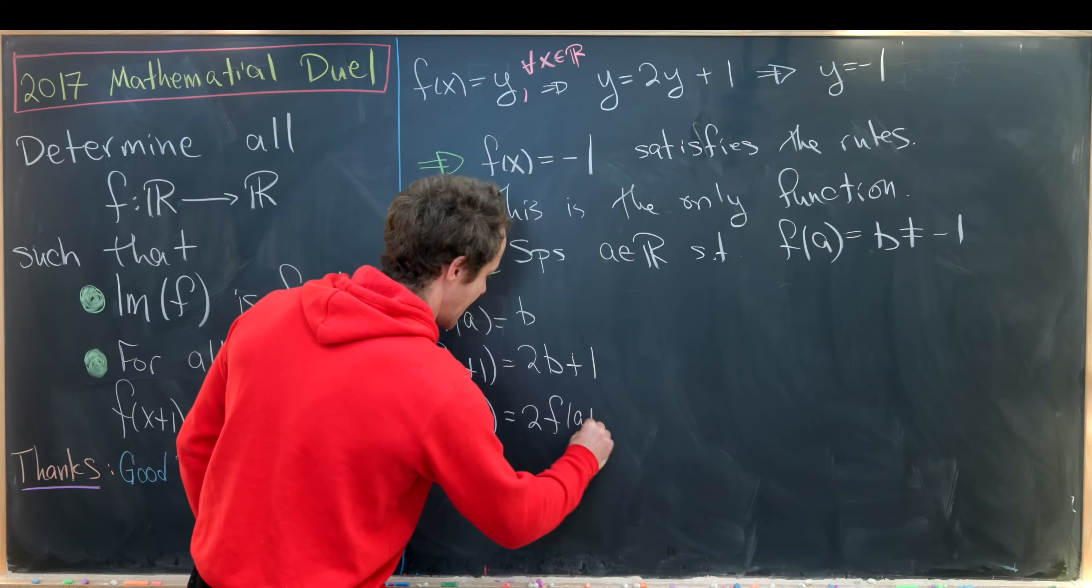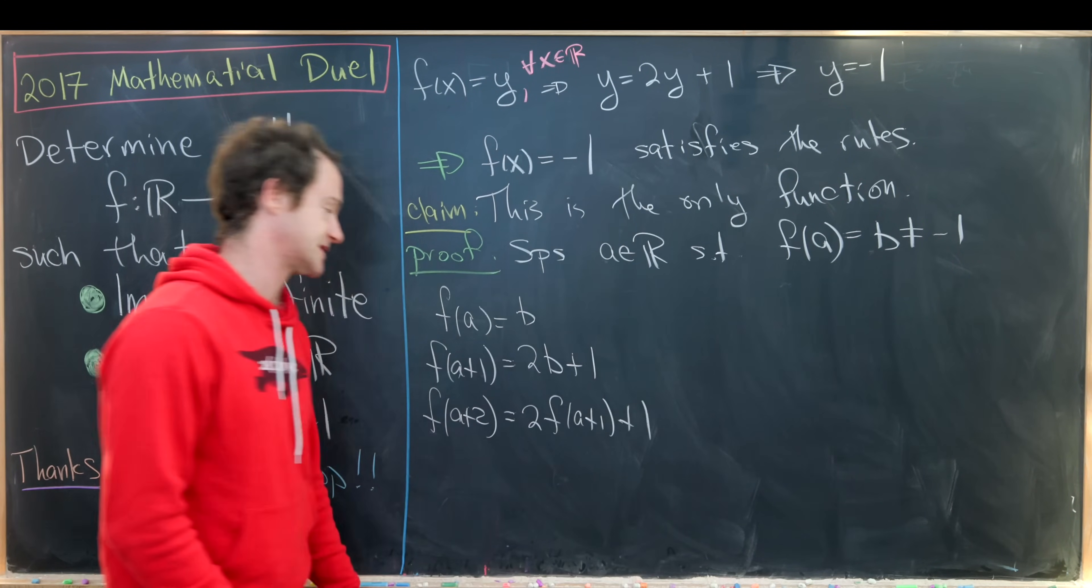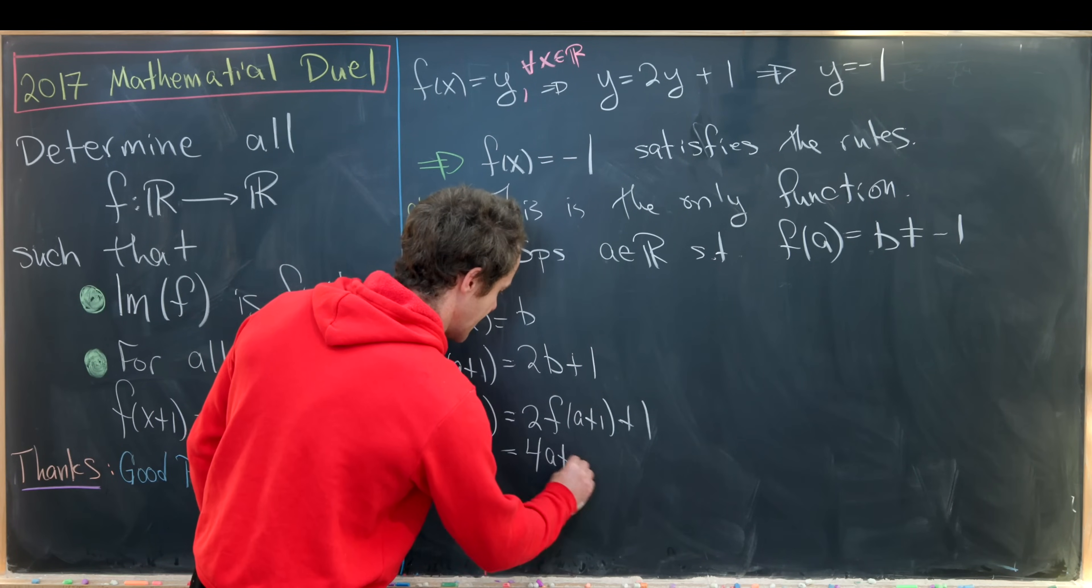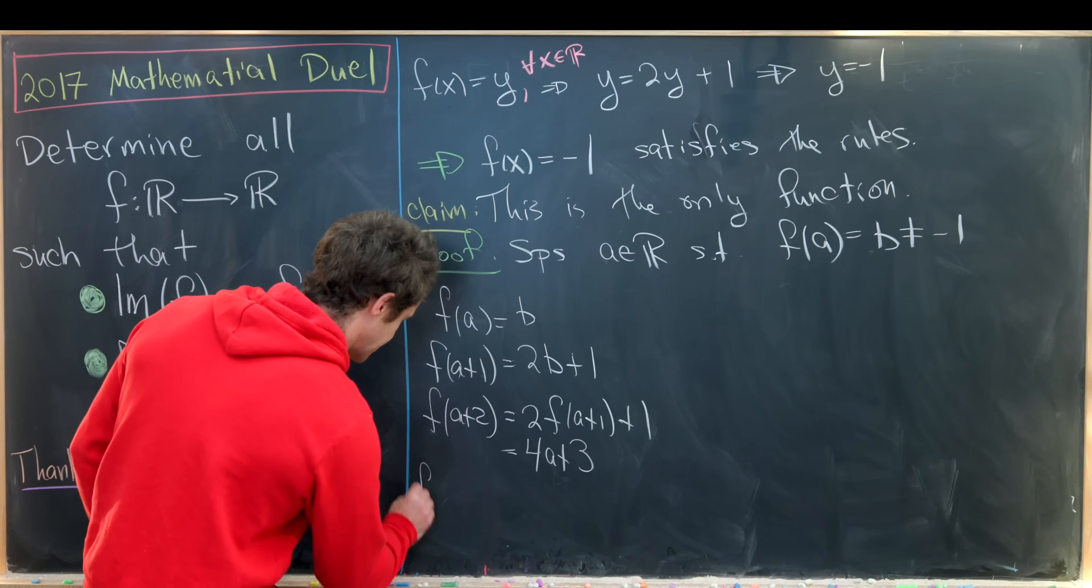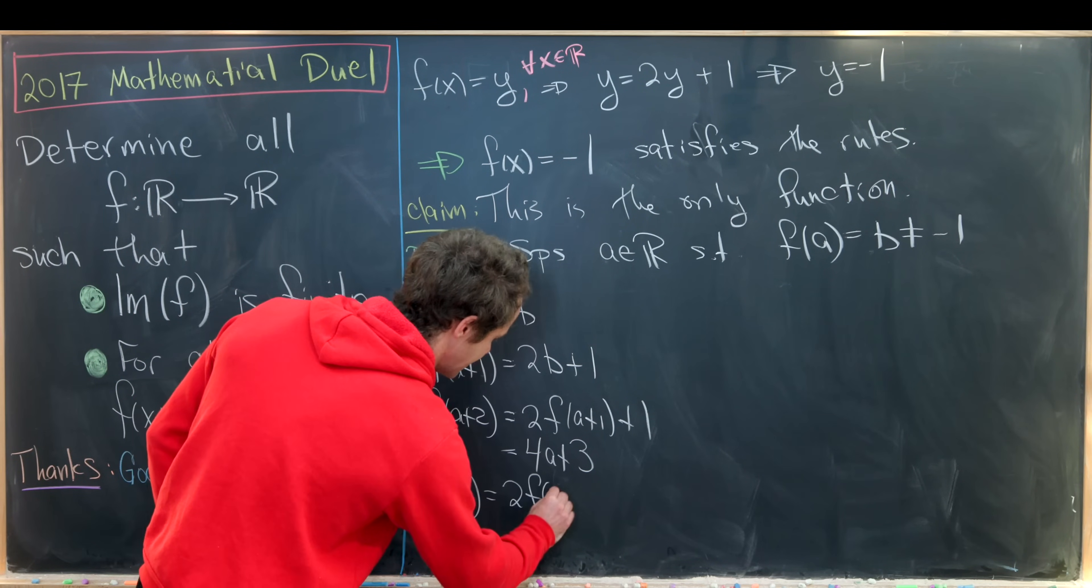times f(a+1) plus 1, applying this rule again where x is a+1. But let's notice that that is 4b plus 3. Then for good measure, let's apply it again. f(a+3), that's 2 times f(a+2) plus 1, and we'll see that we get 8b plus 7. And that brings us to the following claim